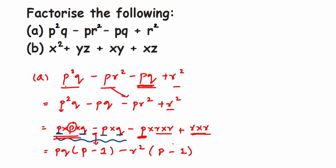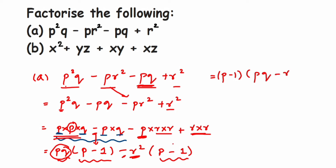Now we have p q times (p minus 1), minus r squared times (p minus 1). We can see that (p minus 1) is present in both terms as a common factor. Taking (p minus 1) outside, we are left with p q and minus r squared. So the answer to the first question is (p minus 1)(p q minus r squared).